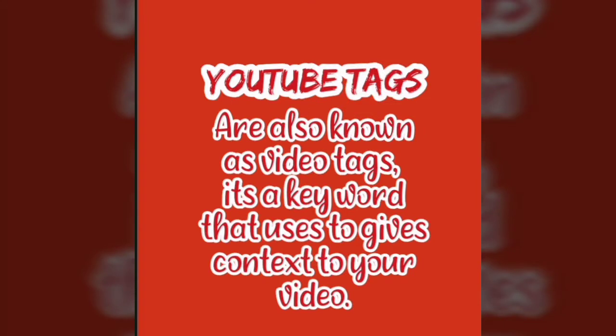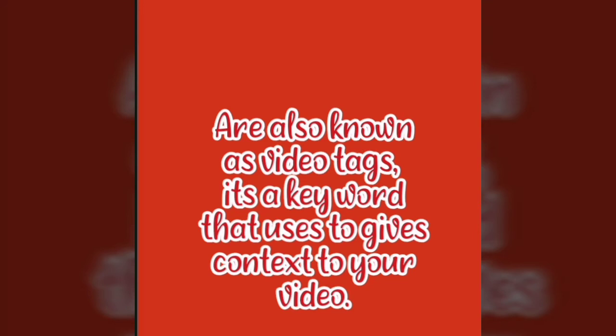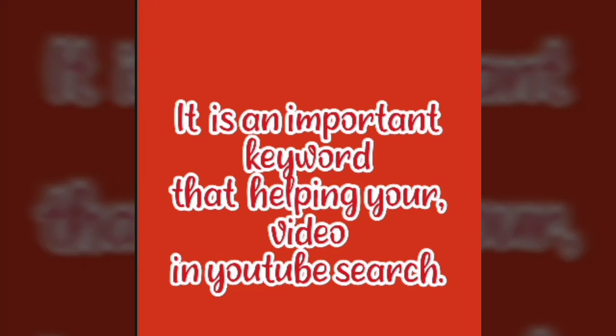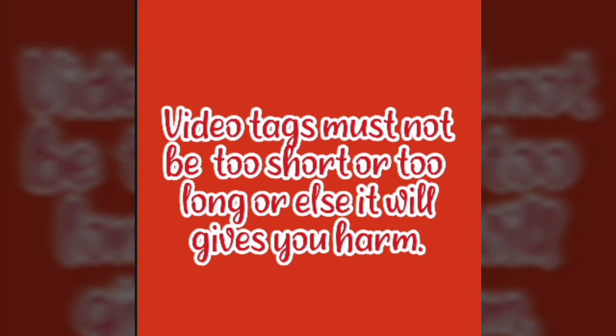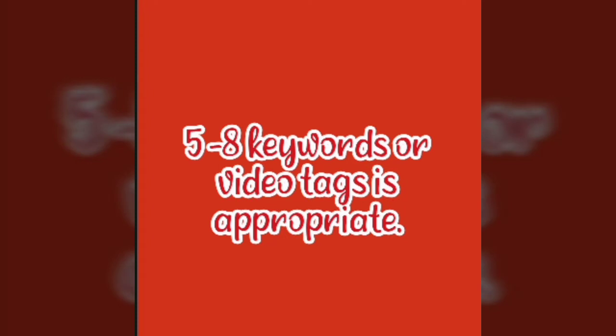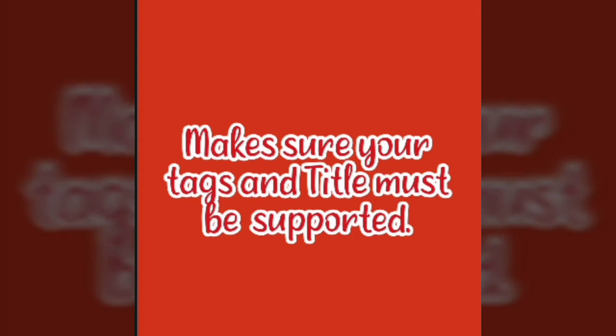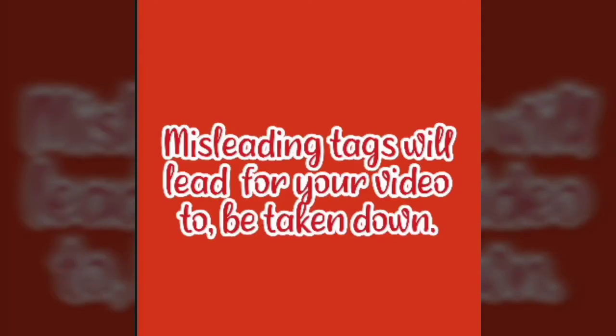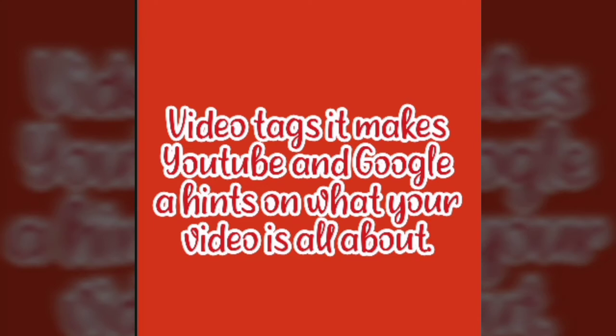YouTube tags, also known as video tags, is a keyword that gives context to your video. It is an important keyword that helps your video in YouTube search. Video tags must not be too long or too short, or else it harms your ranking. Five to eight keywords or video tags is appropriate. Make sure your tags and title are supported — misleading tags can cause your video to be taken down. Video tags help YouTube and Google understand what your video is all about.